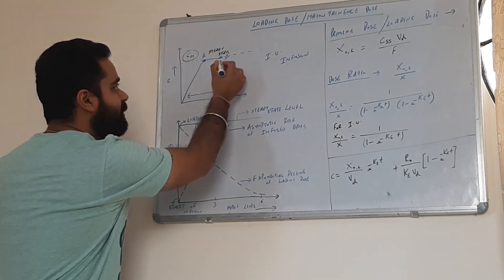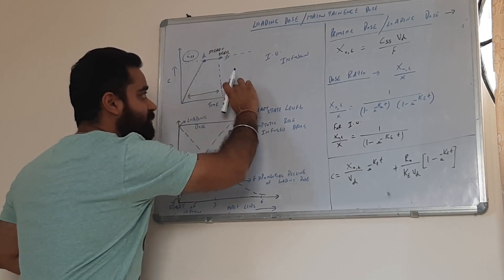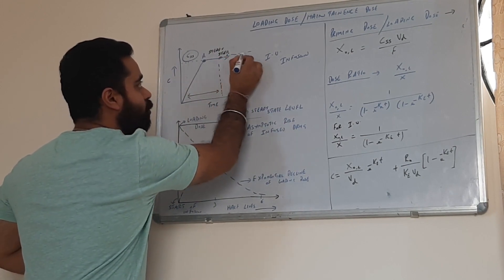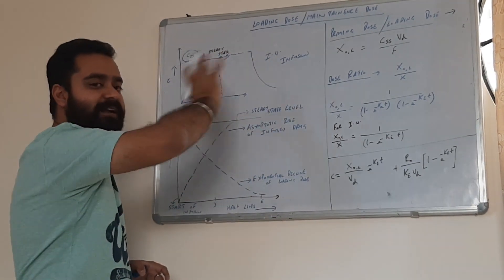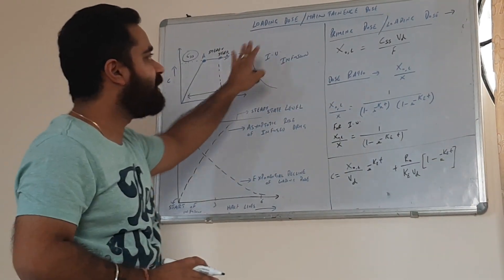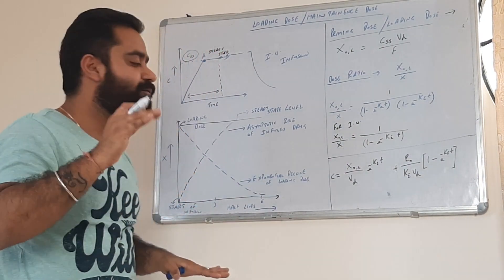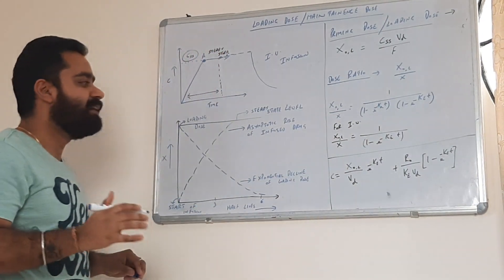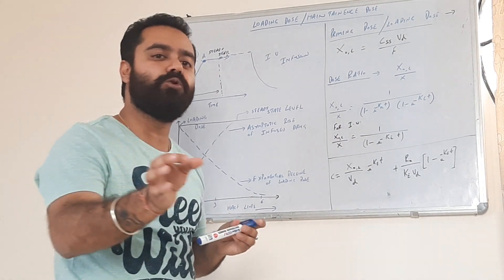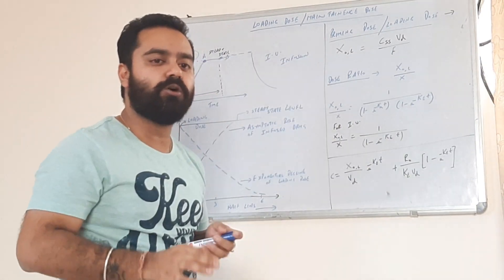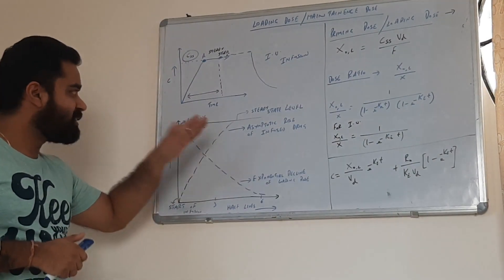In order to prolong this action — if we want to prolong this so that the decline happens after a very long time — we have to give another dose, that is the maintenance dose. For example, initially we give a large bolus dose followed by slow infusion.